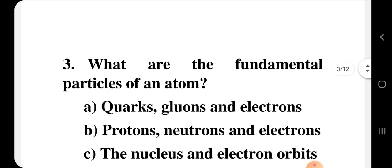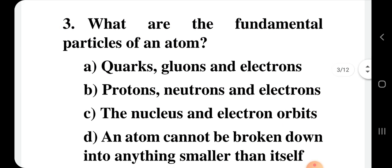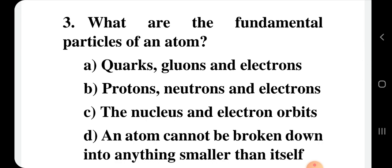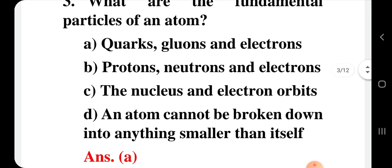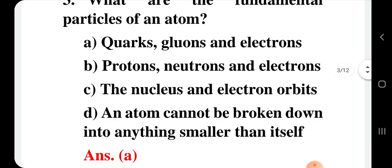Question number 3: What are the fundamental particles of an atom? Options include: quarks, gluons and electrons; protons, neutrons and electrons; proton, neutron, the nucleus and electron orbits; or that an atom cannot be broken down into anything smaller than itself. The fundamental particles which are not made up of smaller particles should be identified.